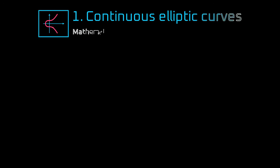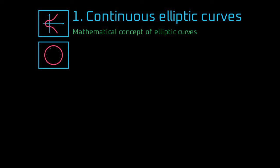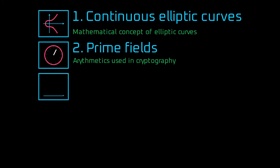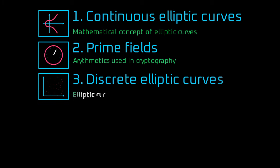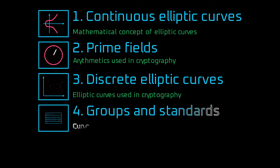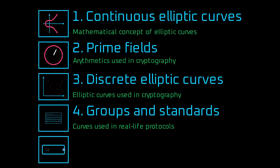So here's the plan. First, to get the gist of it, we'll take a look at the general mathematical idea of elliptic curves. Then we'll look at prime fields, which are the arithmetics used in cryptography. Next, we'll combine them both into discrete elliptic curves, and we'll take a closer look at standardized curves used in real-life protocols. Armed with this knowledge, we'll unravel what private keys and Ethereum addresses really are.